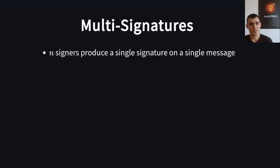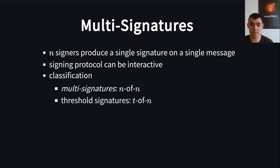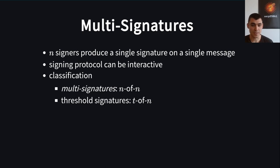Multi-signatures allow N signers to produce a single signature on a single message. The signing protocol can be interactive and require multiple communication rounds. We distinguish between multi-signatures, where N-of-N signers can produce a signature, and threshold signatures, where any subset of size T out of N signers can produce a signature. This work covers only multi-signatures.